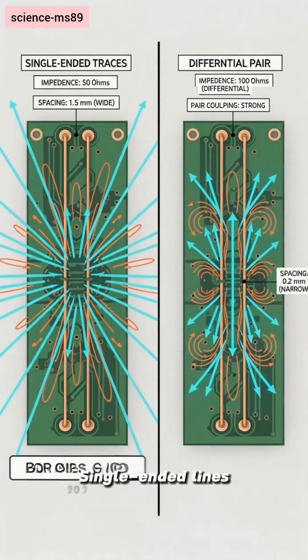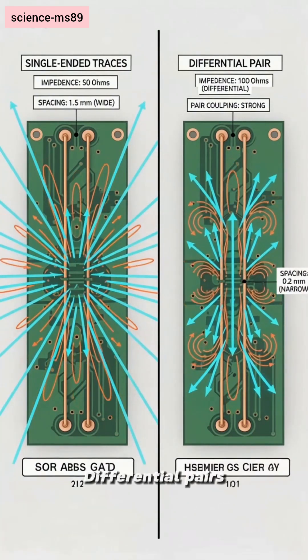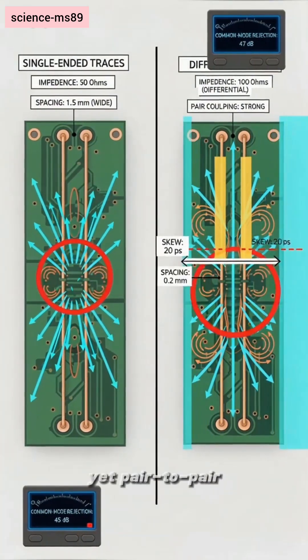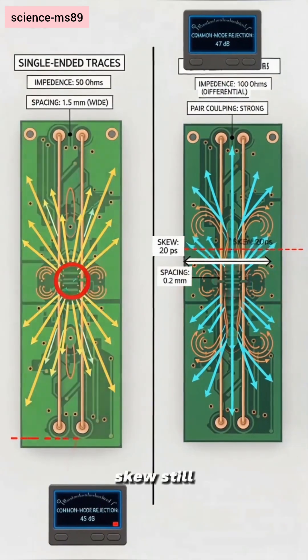Single-ended lines radiate. Differential pairs contain fields and reject common mode noise, yet pair-to-pair coupling and skew still need careful control.